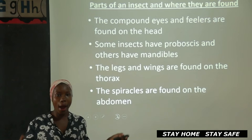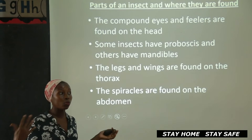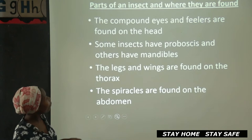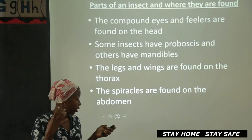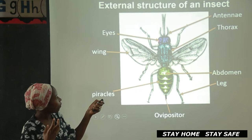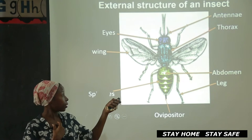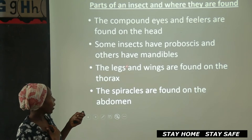Let's see where each part is found. Remember I said we have three main body parts — sometimes we call them body divisions. So let's see where each part is found: parts of an insect and where they are found. The compound eyes and fillers are found on the head. On the head, that's where you find the compound eyes and the fillers. Another name for fillers is antenna. Some insects have proboscis and others have mandibles.